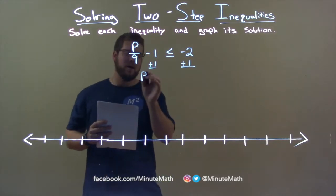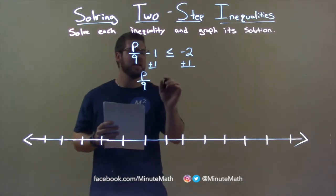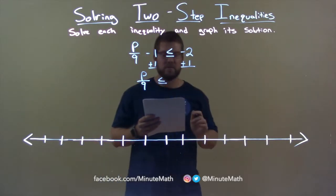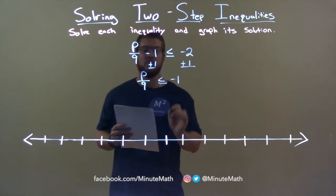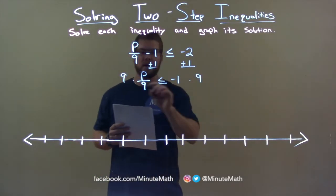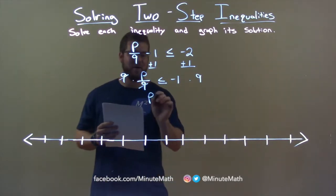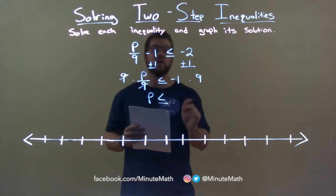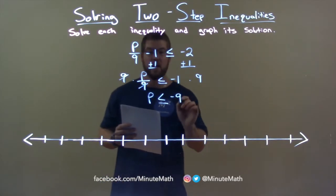P is now, or not by itself, it's P over 9. And it's less than or equal to negative 2 plus 1 is negative 1. Now we multiply 9 to both sides. 9s cancel and P is now by itself. It's less than or equal to negative 1 times 9 is negative 9.